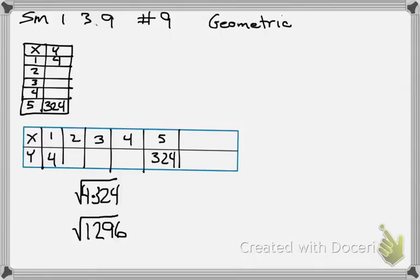36. So the geometric mean of 4 and 324 is 36. Now, the second term is right in the middle of the first and third term, right? So all we have to do now is find the geometric mean of 4 and 36. So what is 4 times 36? So what is the square root of 144? 12.